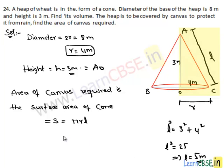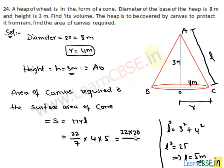Let's substitute the values. Pi is 22 upon 7, radius is 4, and L is 5. We get 22 times 20 upon 7, which is equal to 440 upon 7 meters squared. This completes our solution.